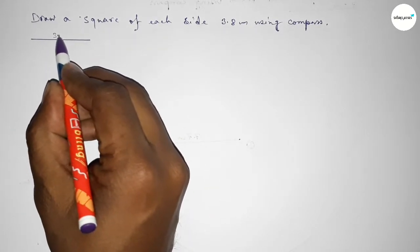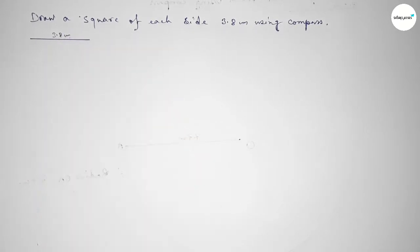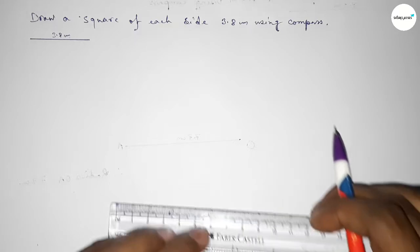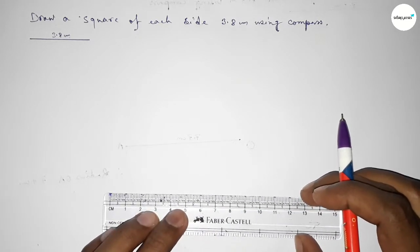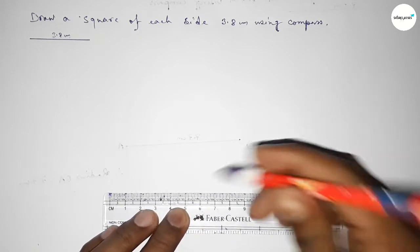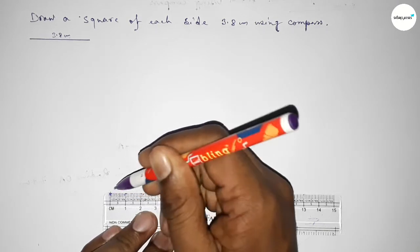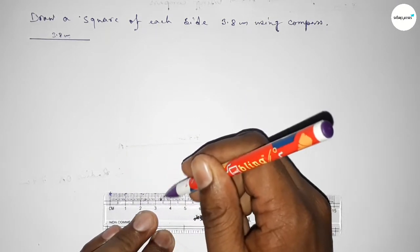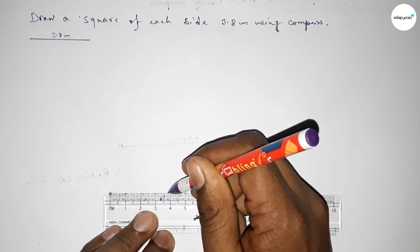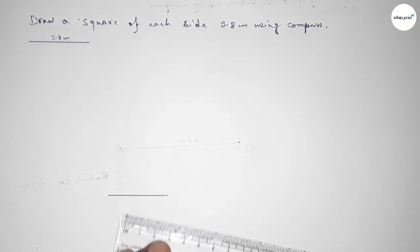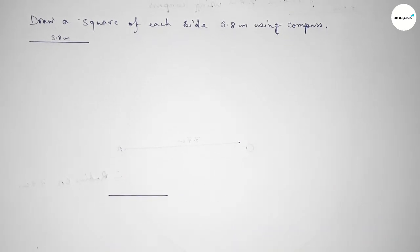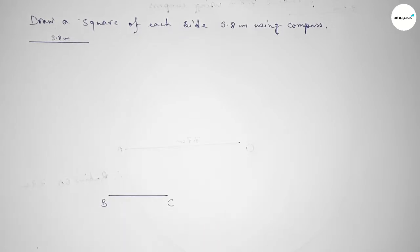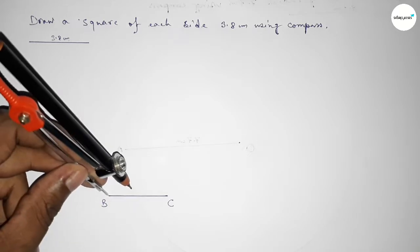Now we have to draw here again a line of length 3.8 centimeter — starting 0, 1, 2, 3, 3.5, 6, 7, 8 — so this is a 3.8 centimeter line. Taking here point B and here point C. Now we have to draw a 90 degree angle on the point B, so putting the compass on the point B.